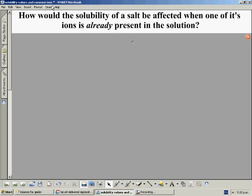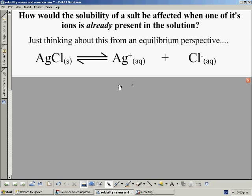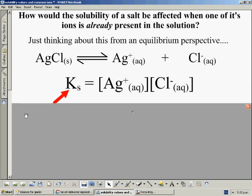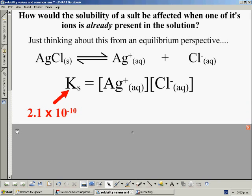We'll begin by thinking about things from an equilibrium expression. We have an equilibrium reaction for something dissolving, and this can also be paired up with the equilibrium expression. When this reaction reaches equilibrium, silver ion concentration multiplied by chloride ion concentration will give us the Ks value, which is this number here.